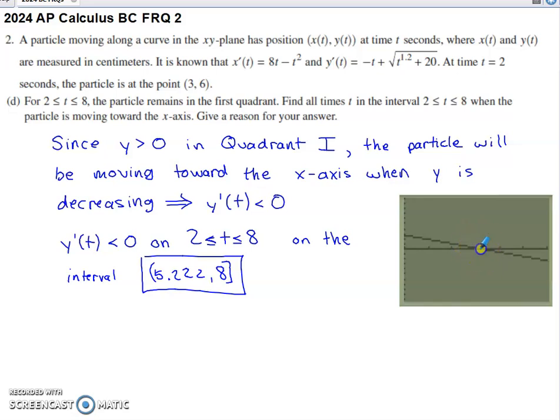until we get to this location here. And then we go negative throughout the remaining stretch of the graph. If you take a few seconds on the calculator to find the zero, what you'll end up with is approximately 5.222.